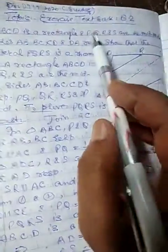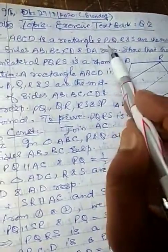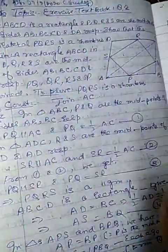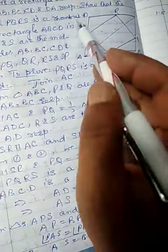Textbook exercise A.2 ka. ABCD is a rectangle. Aap apni kitaab khuli. And P, Q, and RS are the middle points of the sides AB, BC, CD, and DA respectively. We have to show that quadrilateral PQRS is a rhombus.